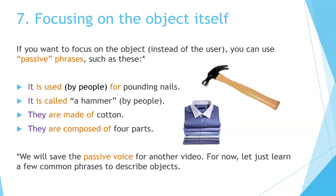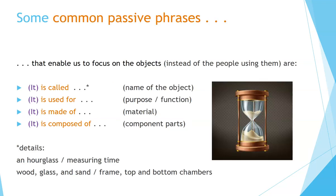Focusing on the object itself. If you want to focus on the object instead of the user, you can use passive phrases such as these: it is used by people for pounding nails; it is called a hammer by people; they are made of cotton; they are composed of four parts. We will save the passive voice for another video. For now, let's learn a few common phrases to describe objects. Some common phrases are: it is called — name of the object; it is used for — purpose or function; it is made of — material; it is composed of — component parts.